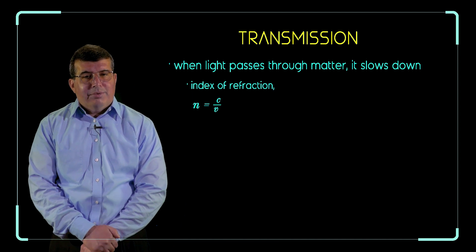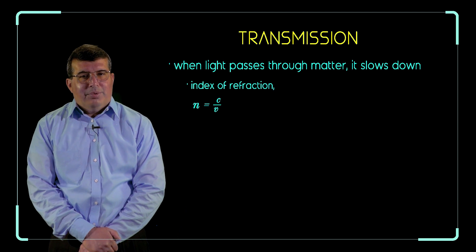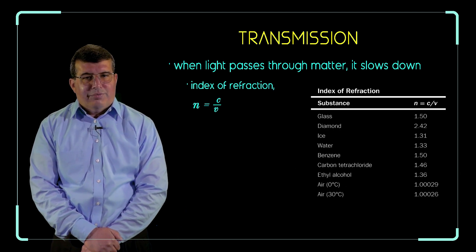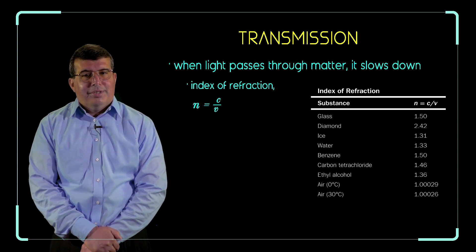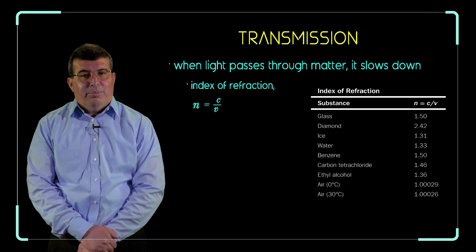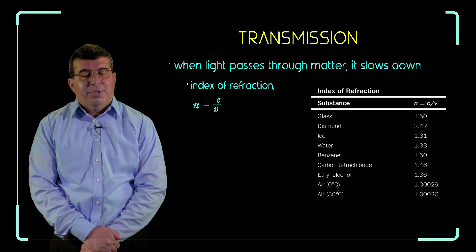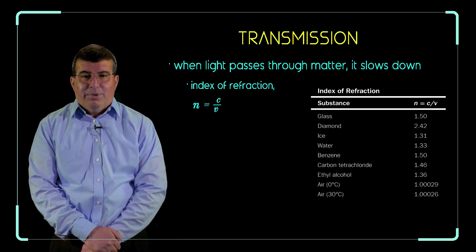Each material will have its own index of refraction, and you can see a table here giving the index of refraction for several different types of material. For example, in glass the index of refraction is 1.5, meaning the speed of light in a vacuum divided by the speed of light in glass is 1.5. Notice there are no units because we have a speed divided by a speed — n is a pure number.